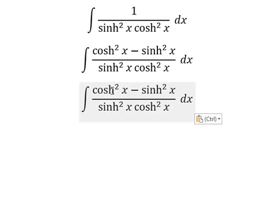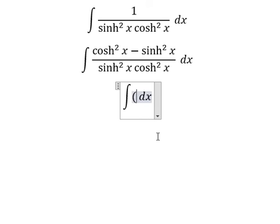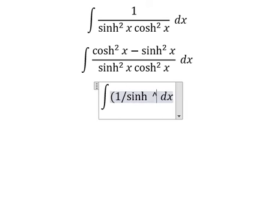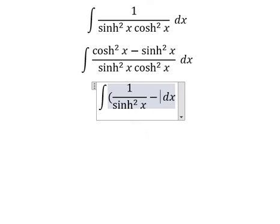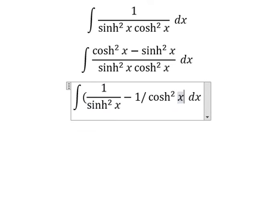So this one divided by this one, and this one divided by this one, you will get about one over sinh²x minus one over cosh²x.